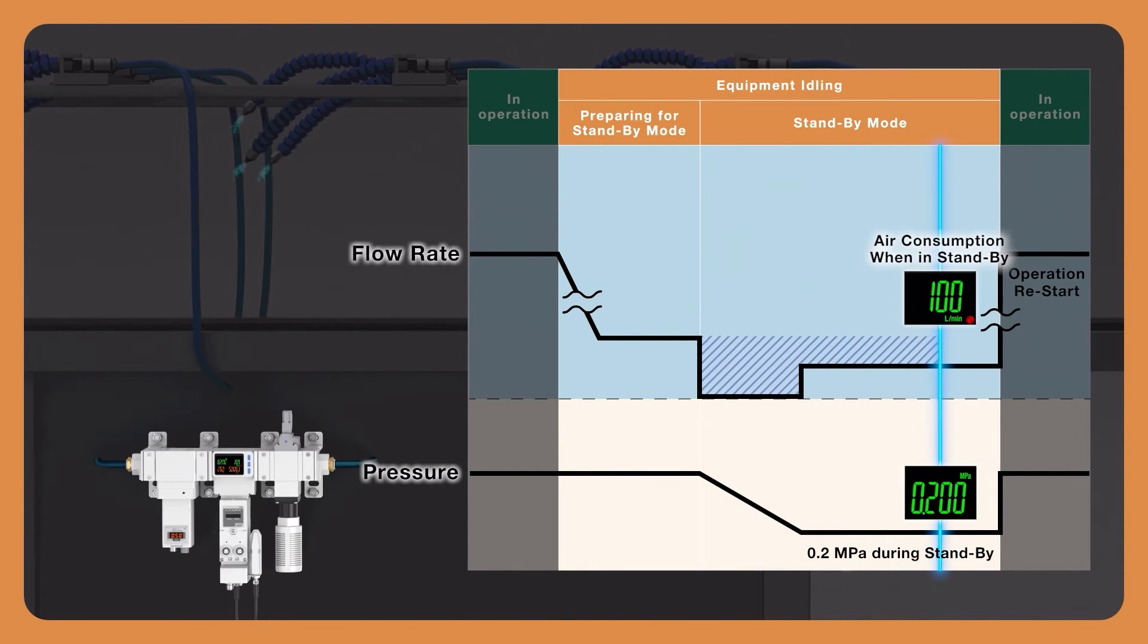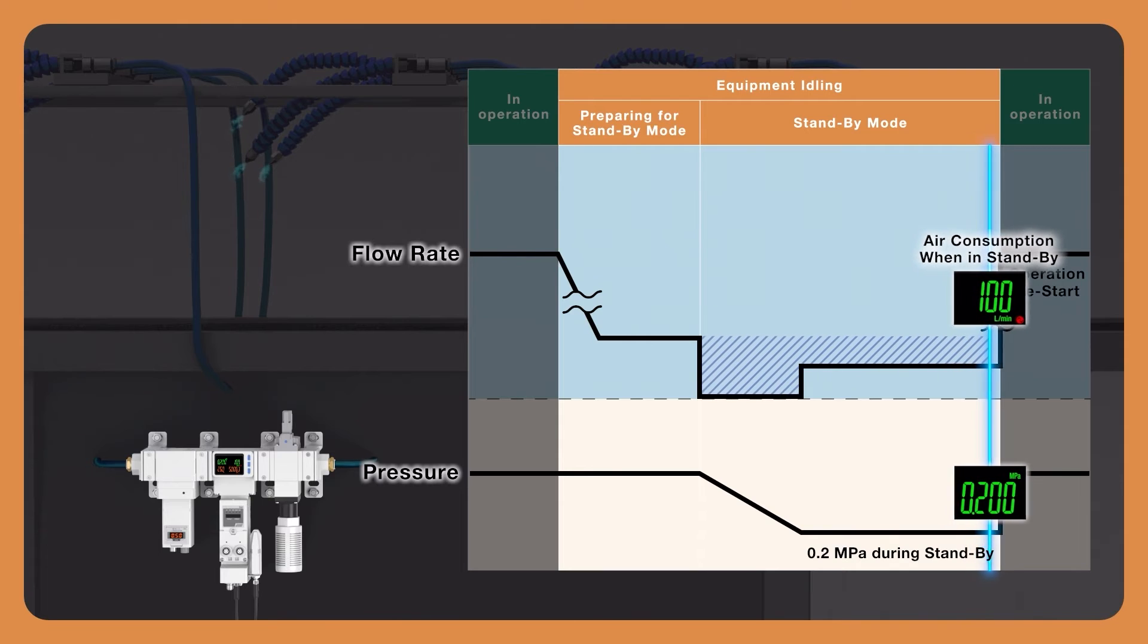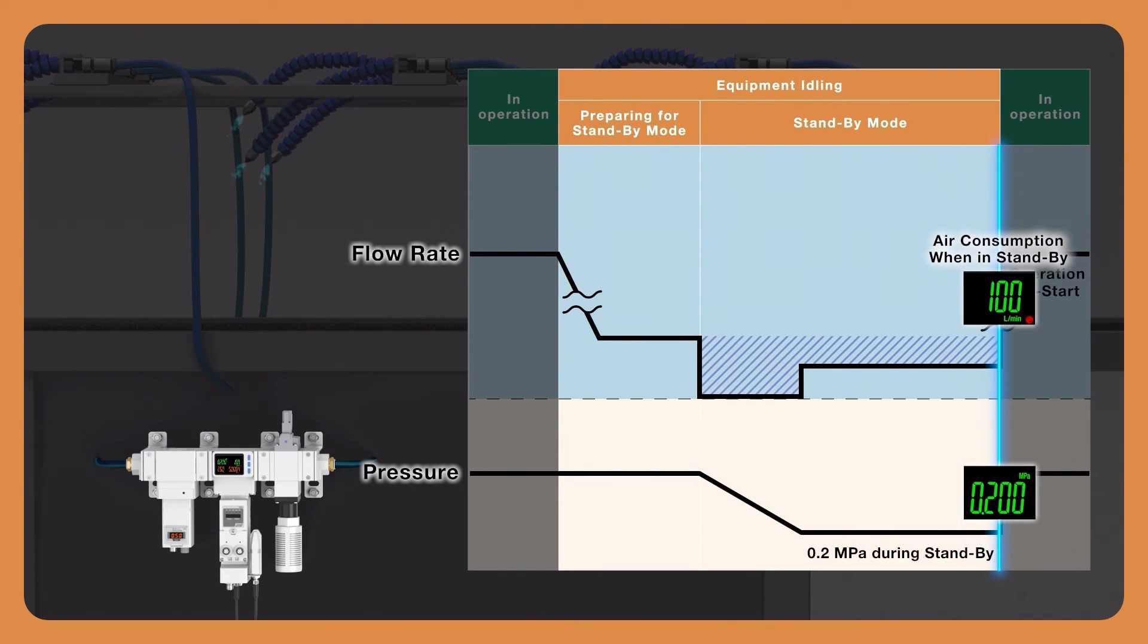If the air management system remains in standby mode longer than the isolation delay time period, again decided by you, the air management system can close and exhaust the supply of air via the residual pressure relief valve, reducing leaks and air wastage even further.